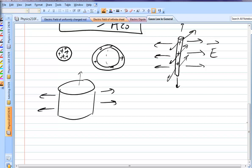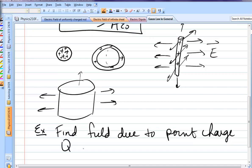Step one is to draw the picture. Let's say, as an example, we want to find the field due to a point charge. We already know the answer to this, but let's use Gauss's law to find it. Find field due to a point charge Q, a distance R from the charge.